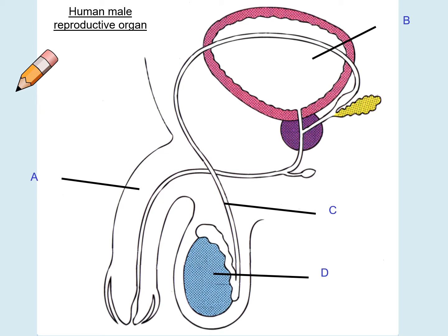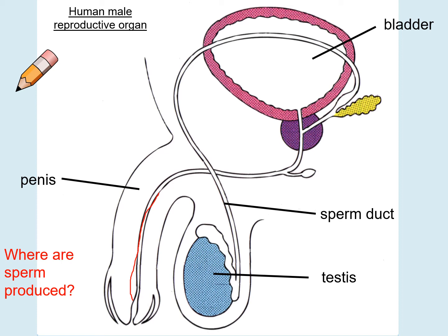You need to be able to label a diagram of the reproductive organs. Looking at the male reproductive organs: A would be your penis and the tube is your urethra; B is your bladder where urine is stored; C is your sperm duct which allows the sperm to move from where it's produced to the urethra; and D is the testes. Sperm are produced in the testes — that is an important part to remember.